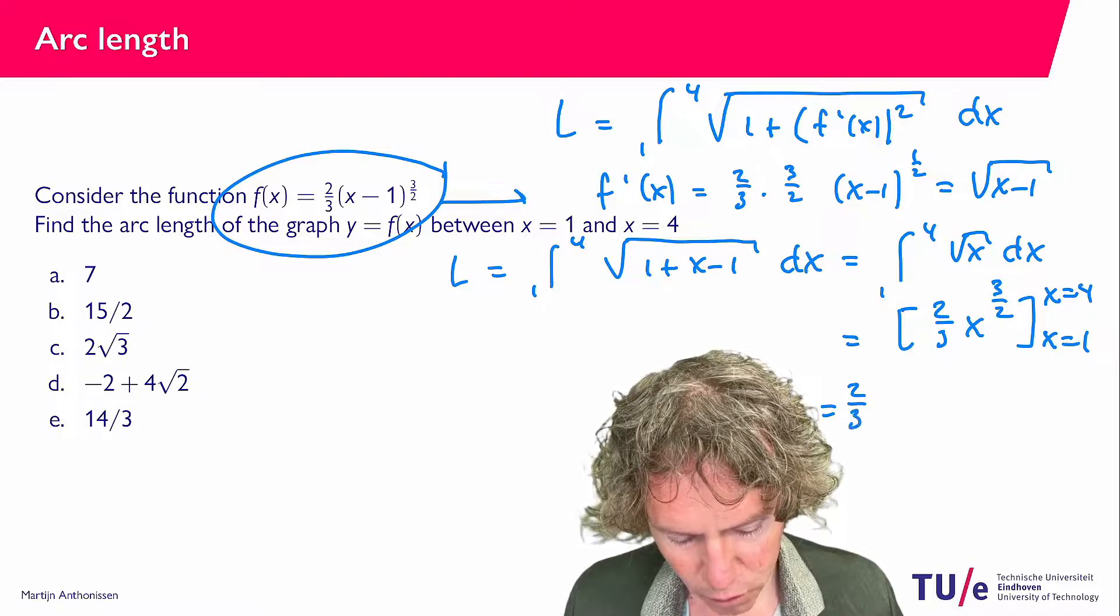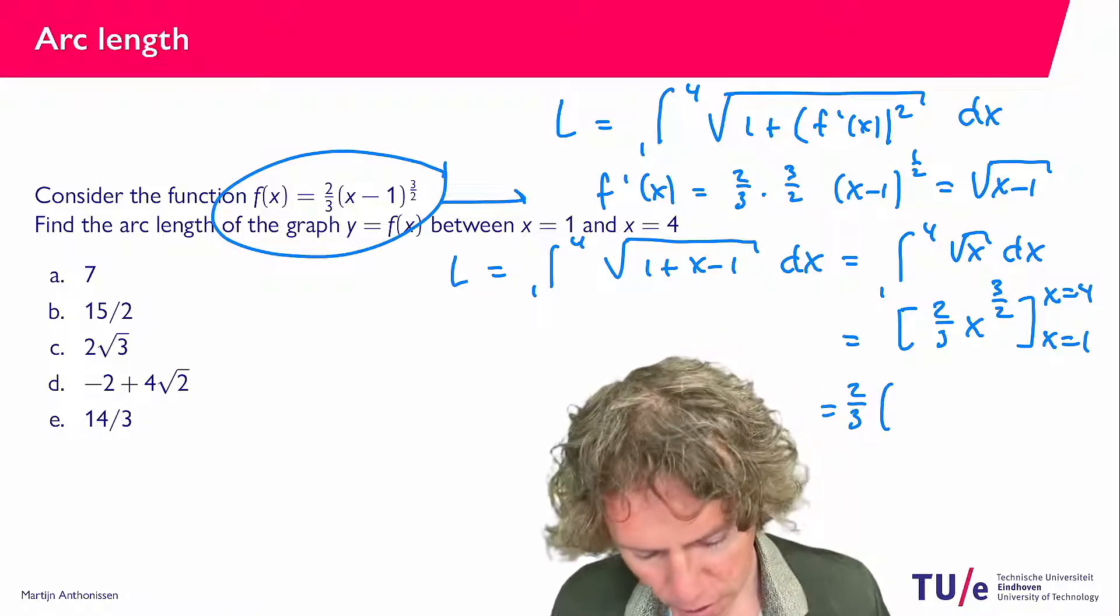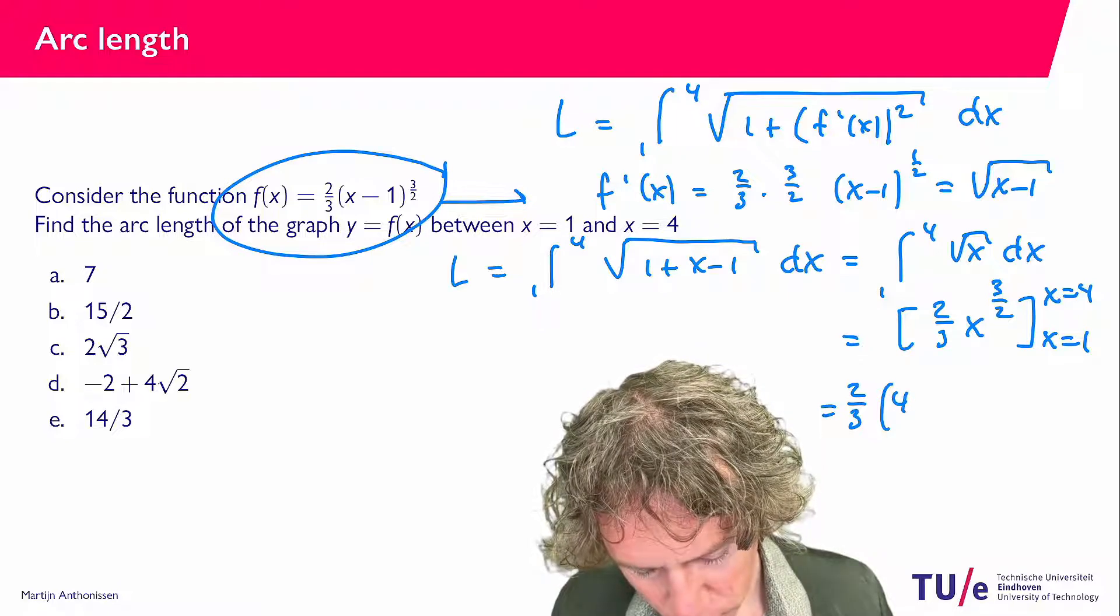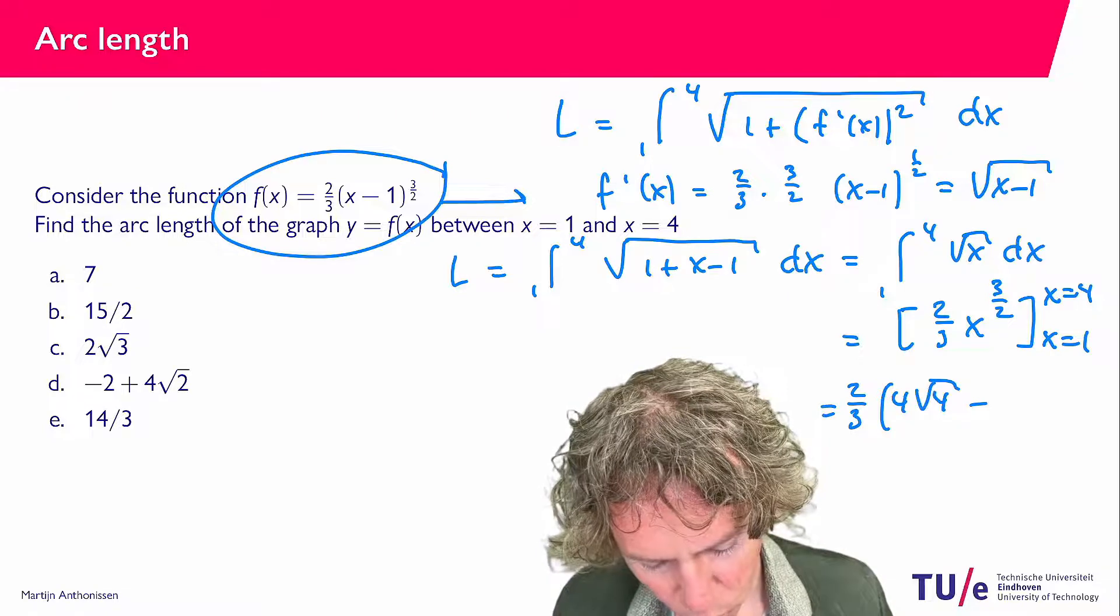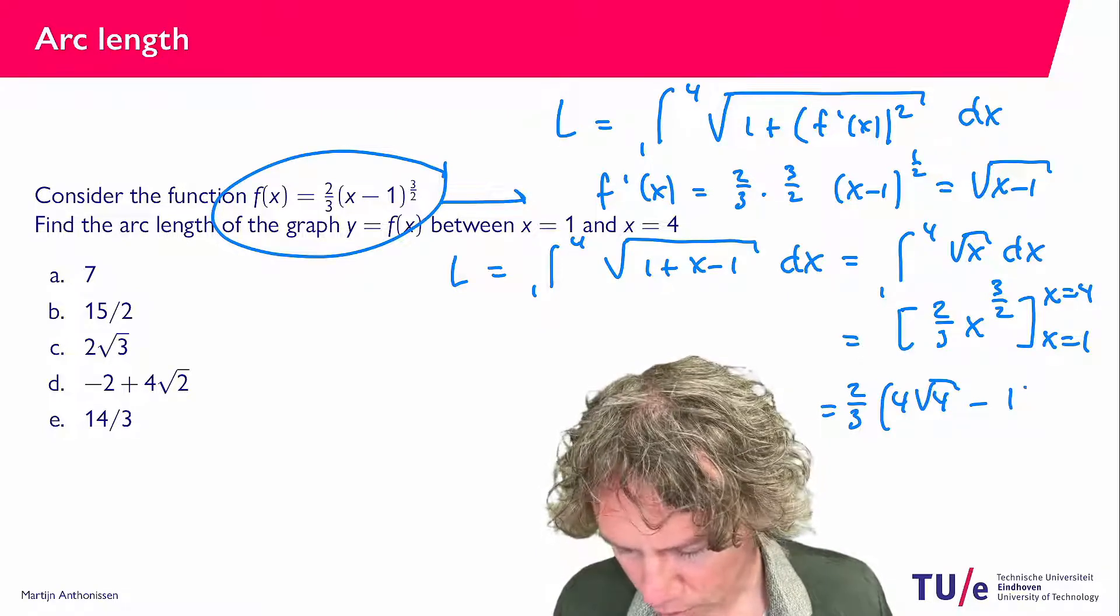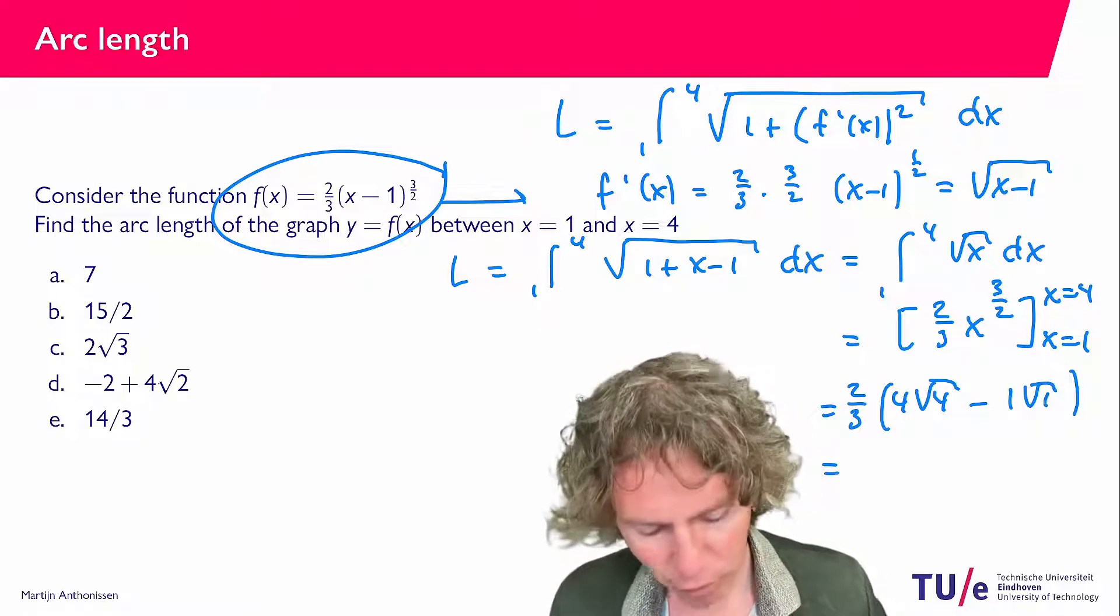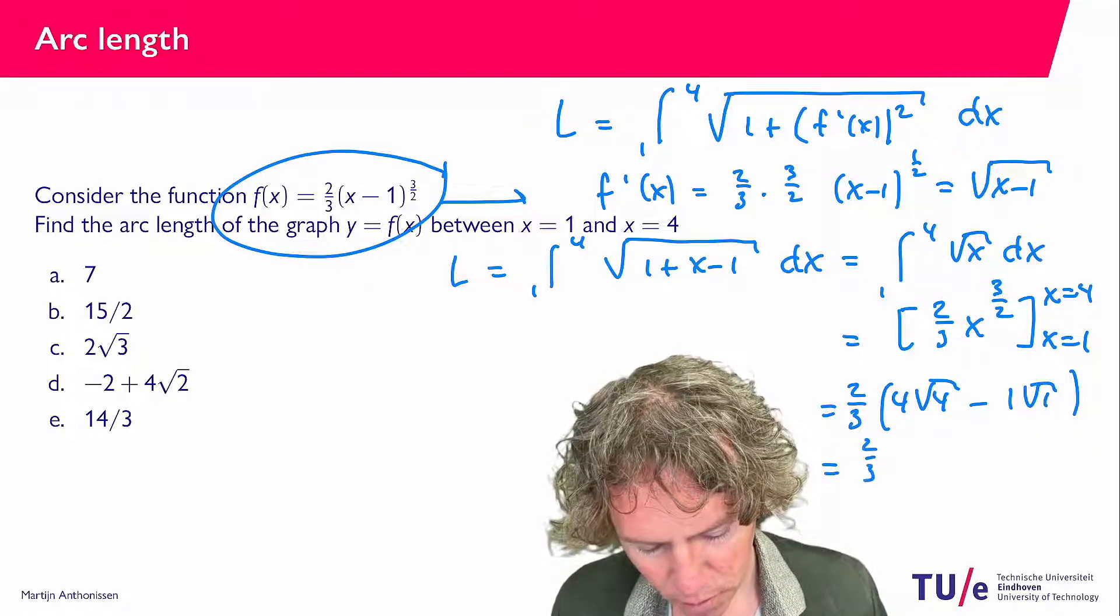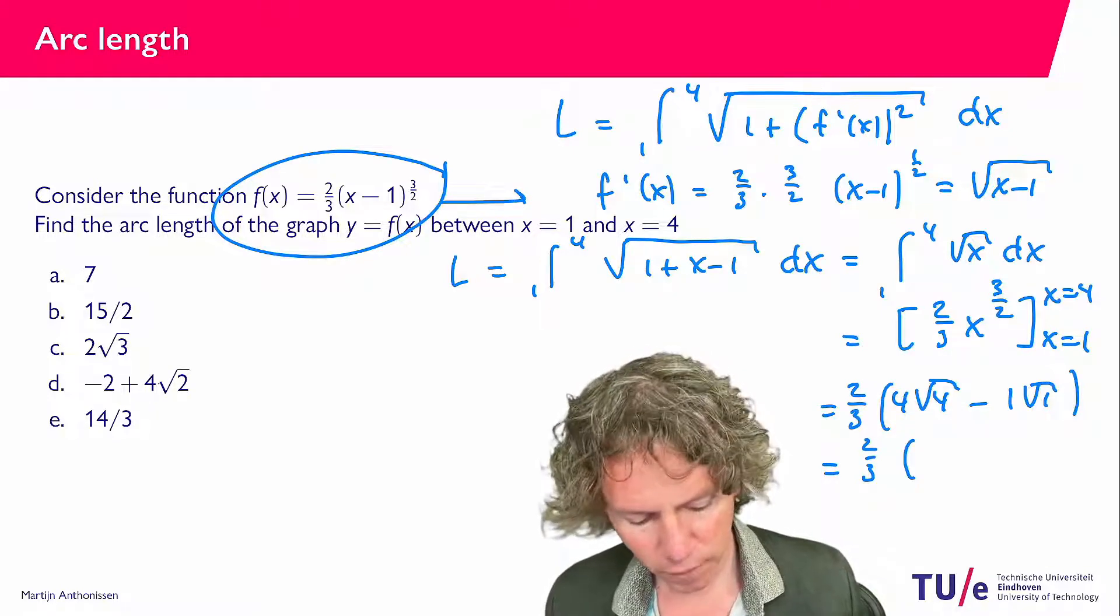two-thirds, plug in x equals 4. So then we find 4 times square root of 4 minus 1 times square root of 1. So we have two-thirds, 4 times 2 equals 8, 8 minus 1 is 7.